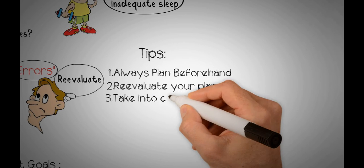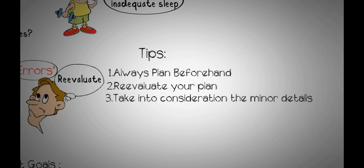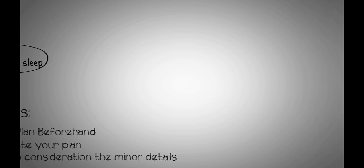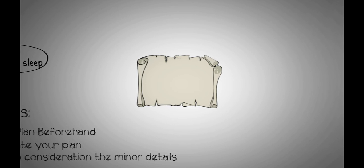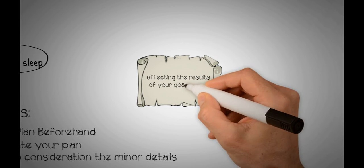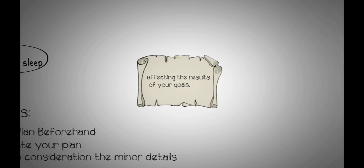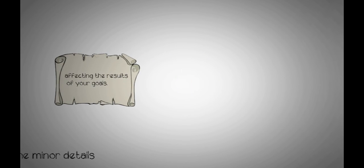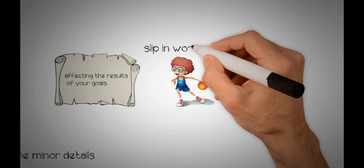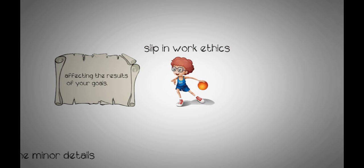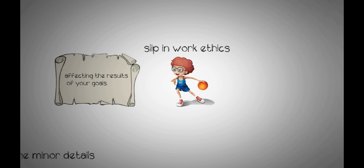Number three: Take into consideration the minor details. By minor, I mean the little details that you may have ignored that may not seem like much on paper value, but is effectively affecting the results of your goals. This may come in the form of your motivation levels when you're performing the particular activity, or perhaps your slip in work ethics and mindset during your progress. These minor details add up over the long run and can be hazardous to your progress.